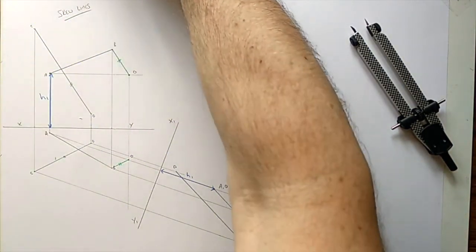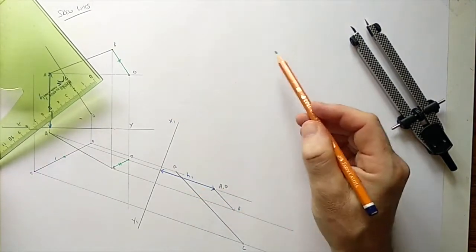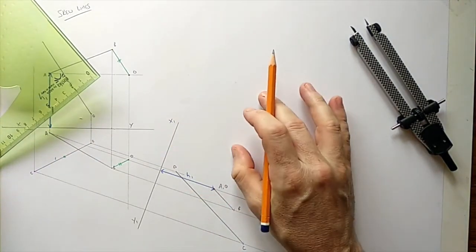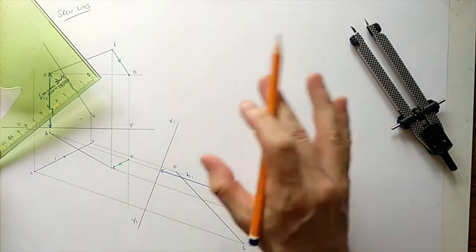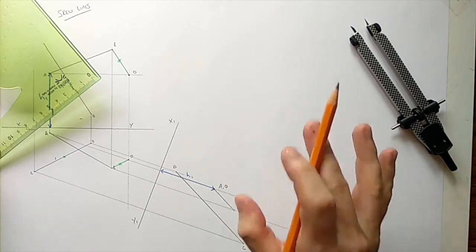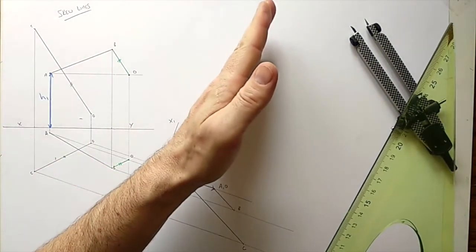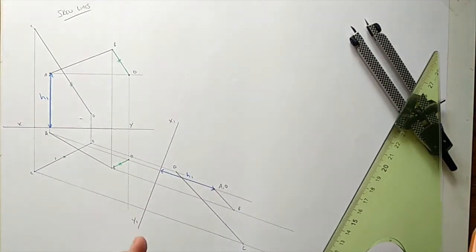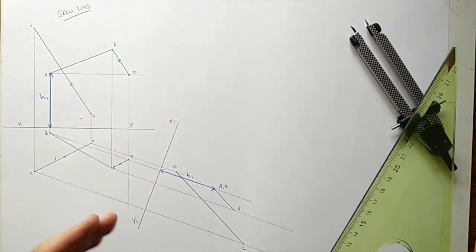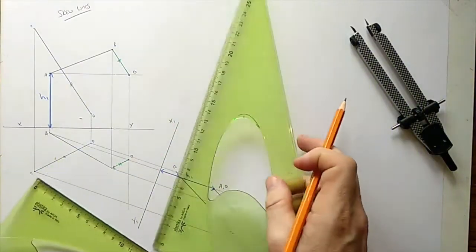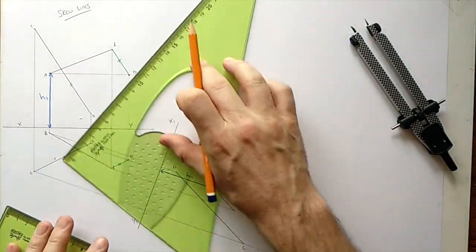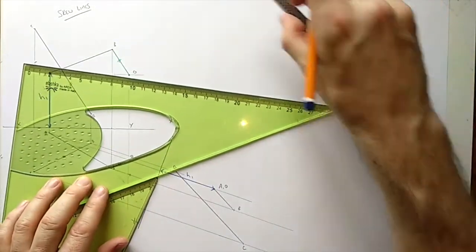Now this is where the skew lines questions can split off into two different forms, either the horizontal distance or the perpendicular distance. So in our case it's the horizontal distance which means we're looking horizontally, so horizontally it's just along the X1Y line because that's our ground. So we're going to look this way, which means our X2Y2 is going to be perpendicular to it.